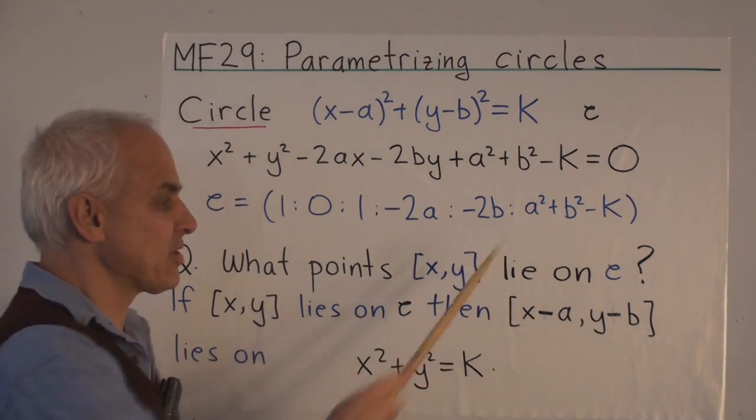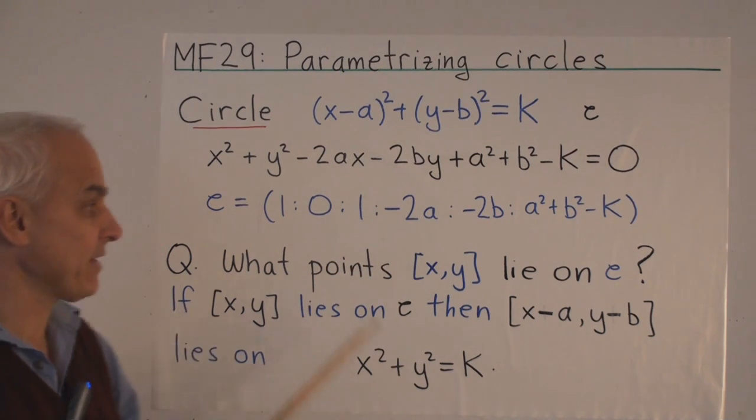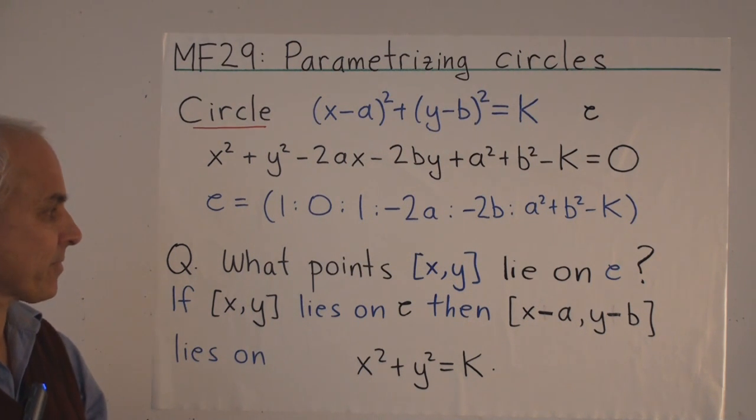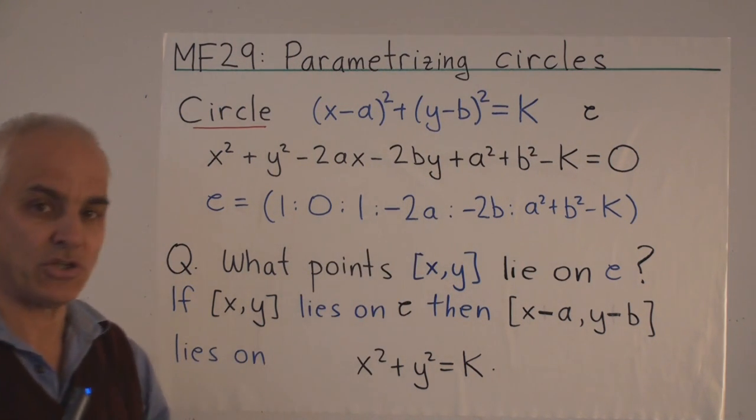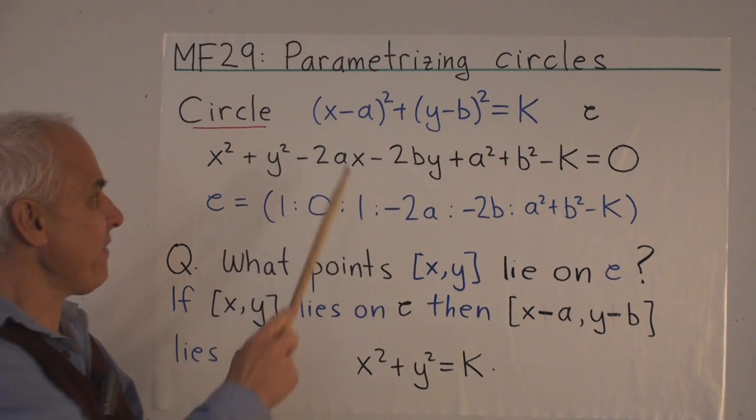This proportion of six coefficients effectively captures what a circle is, and in fact, that's how we defined officially what a circle was. The question we want to talk about today is: when does a point (x,y) lie on such a circle, and which points lie on such a circle?